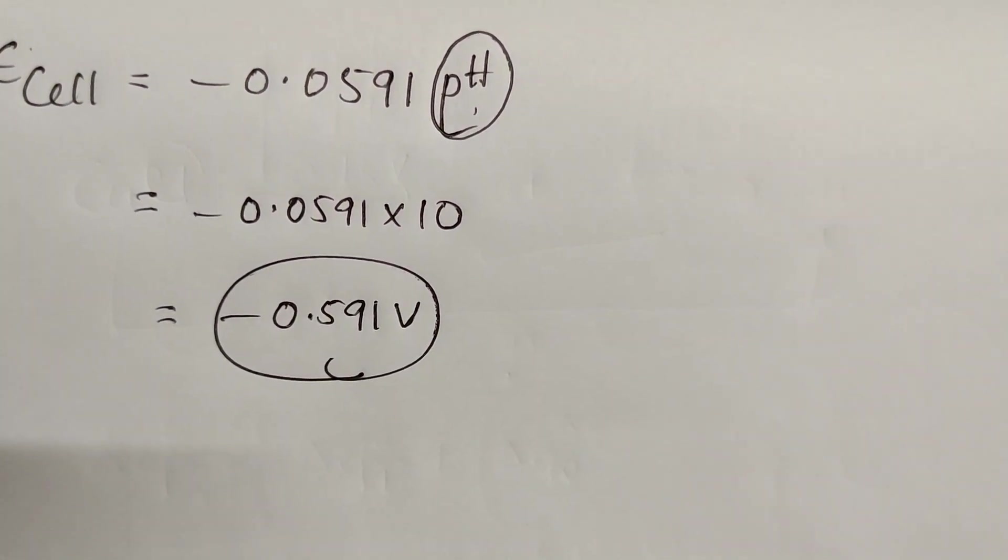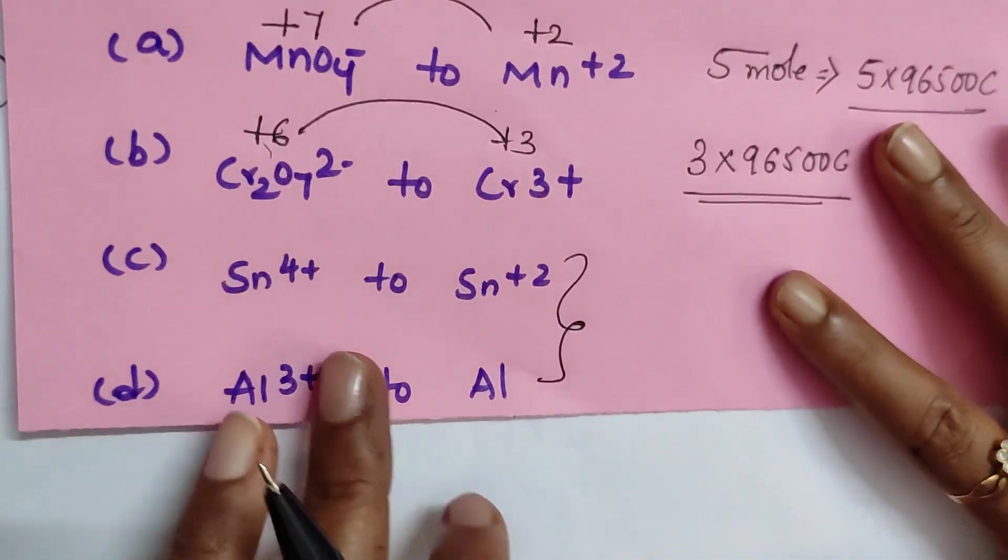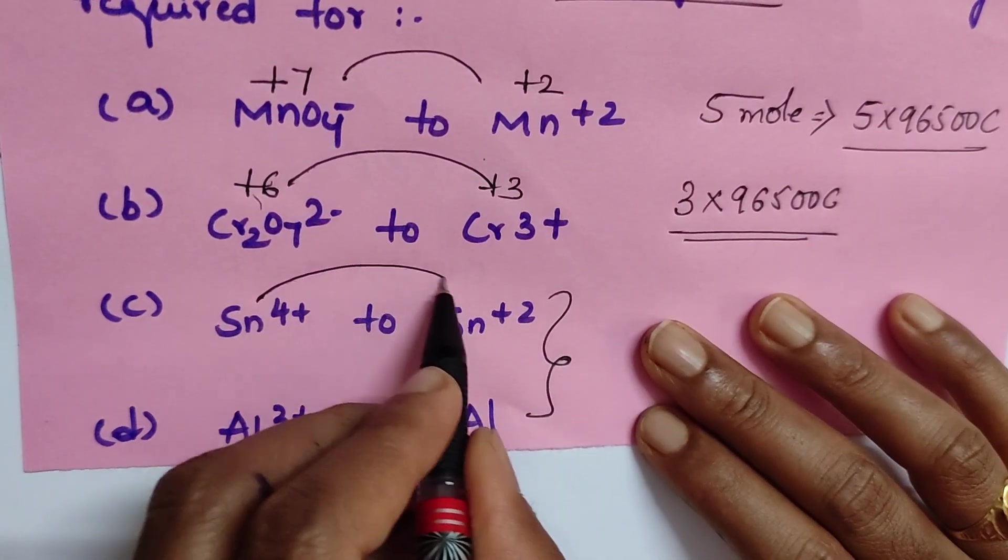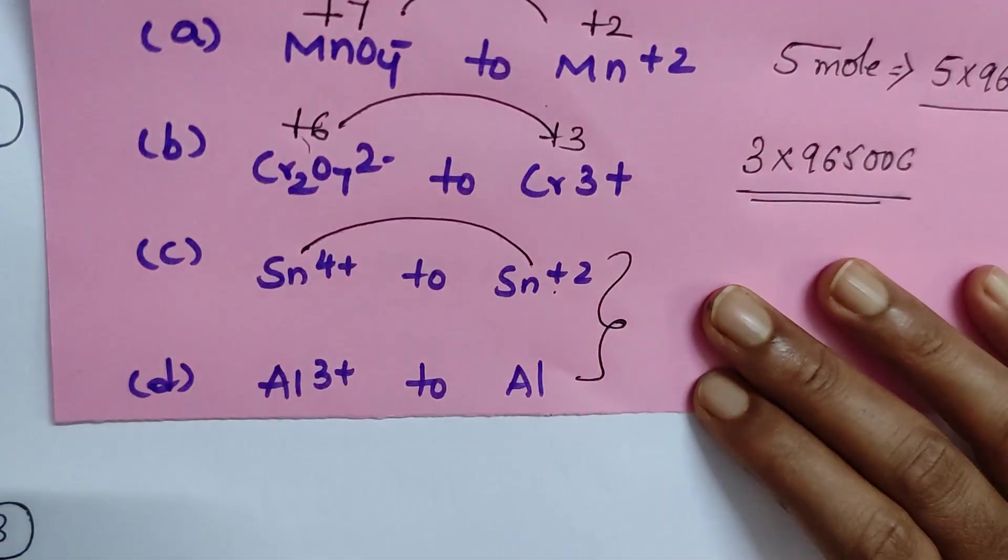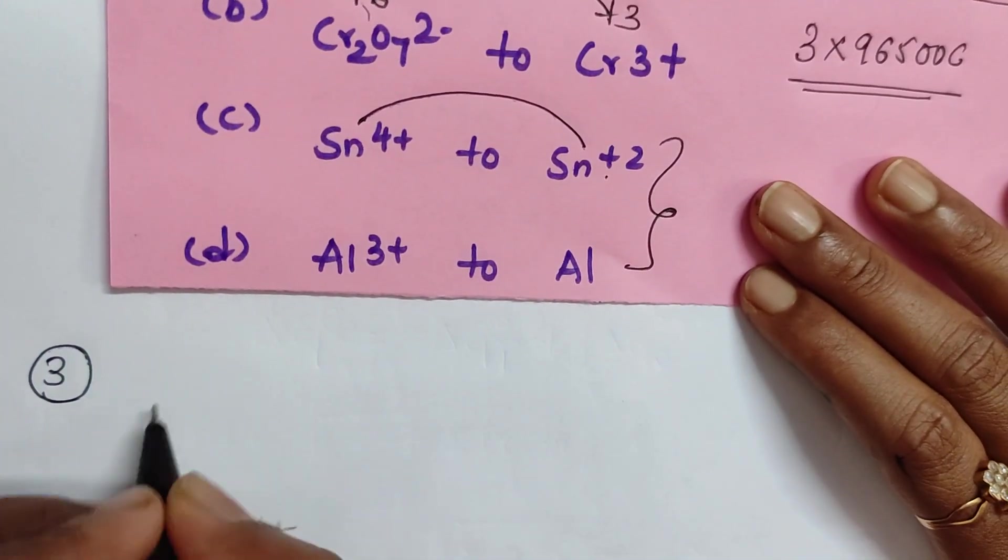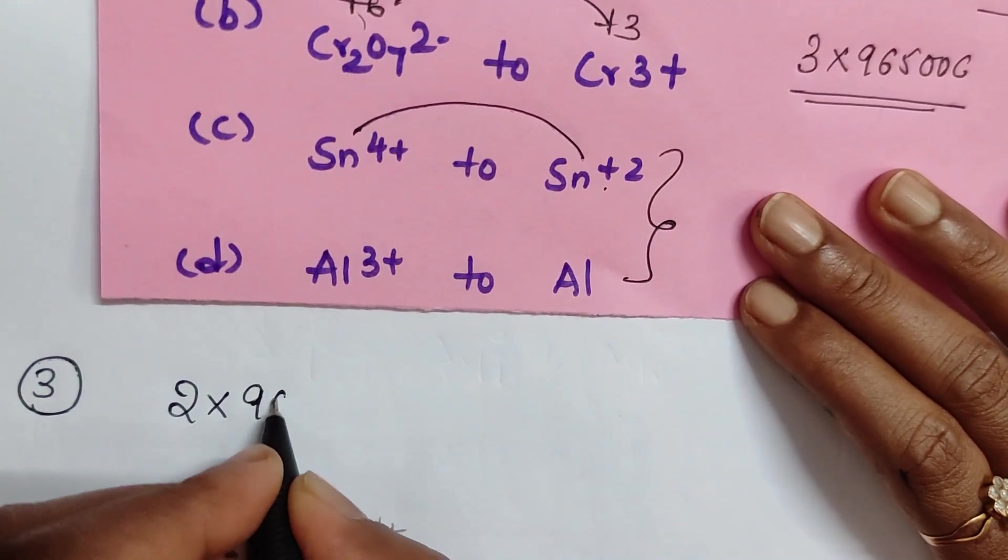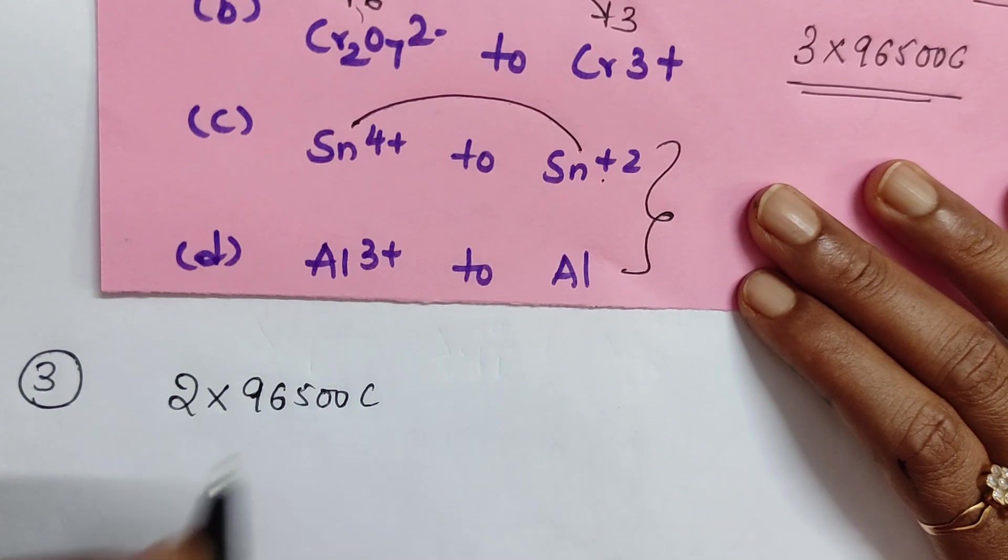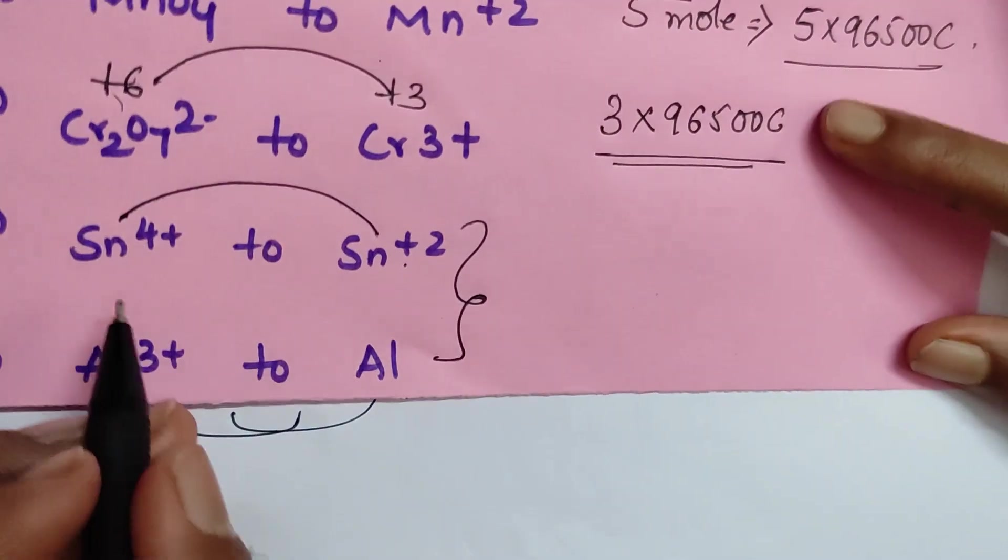Now let me explain trick number three. This question I gave you: just check the change in oxidation number from plus 4 to plus 2. Change in oxidation number is 2 and 2 moles change. One mole electron charge is 96,500 coulombs, so your answer is 2 times 96,500 coulombs.